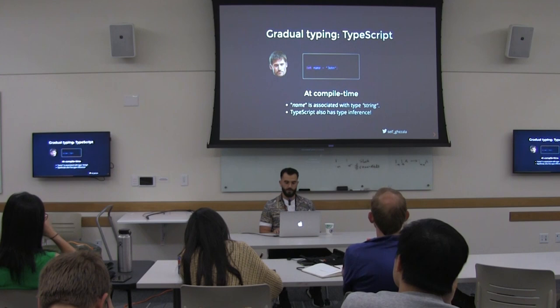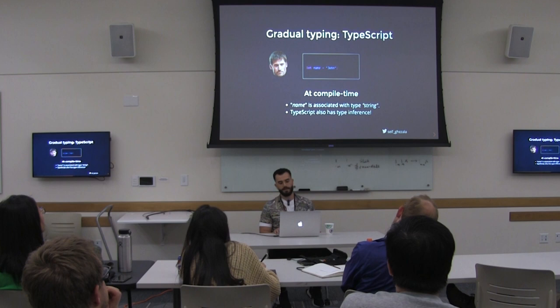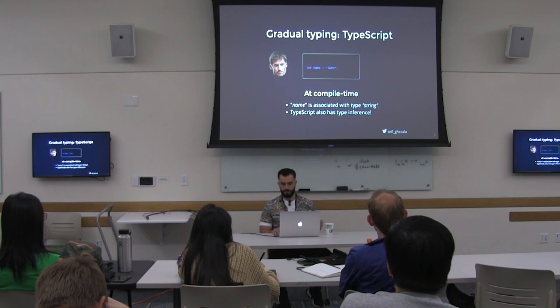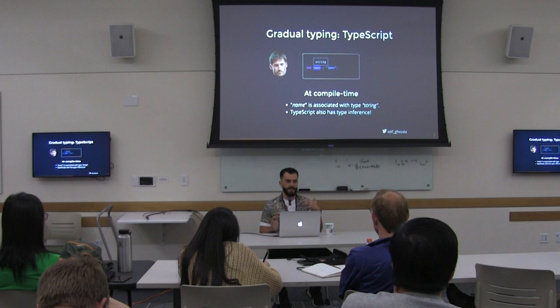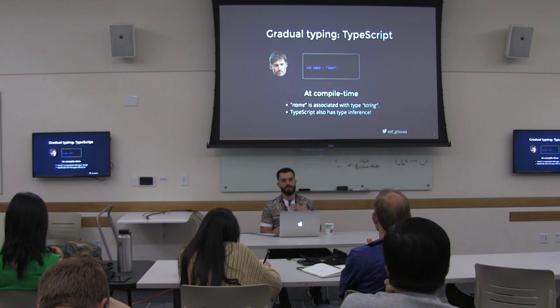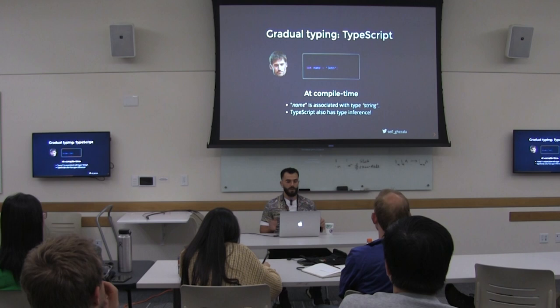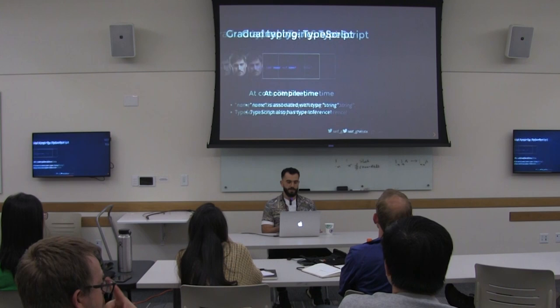Same thing in TypeScript, actually. If you write `let name = 'John'` in the editor and hover over name, you'll be able to see string. Because again, the TypeScript compiler has type inference and at compile time it can guess the type of name. Basically, the main difference between JavaScript, TypeScript, and ReasonML is that JavaScript has no typing at compile time and no type inference at all, whereas the other two have typing at compile time and type inference.